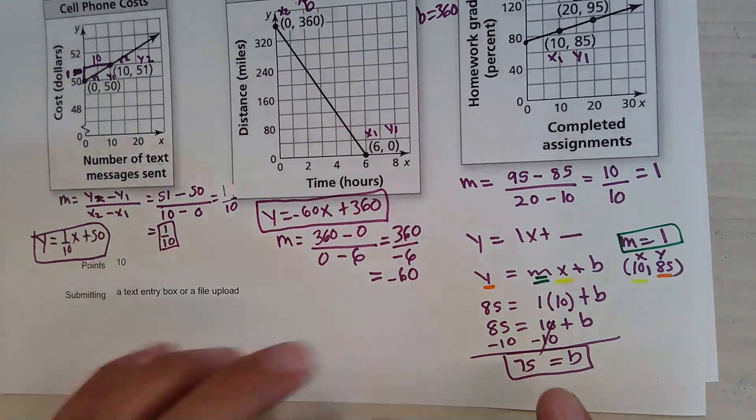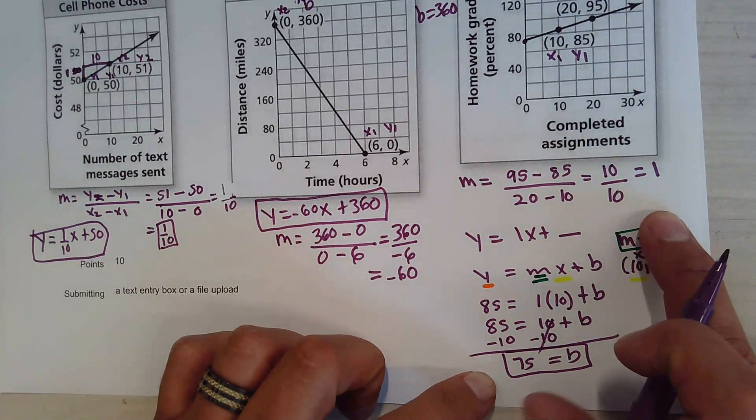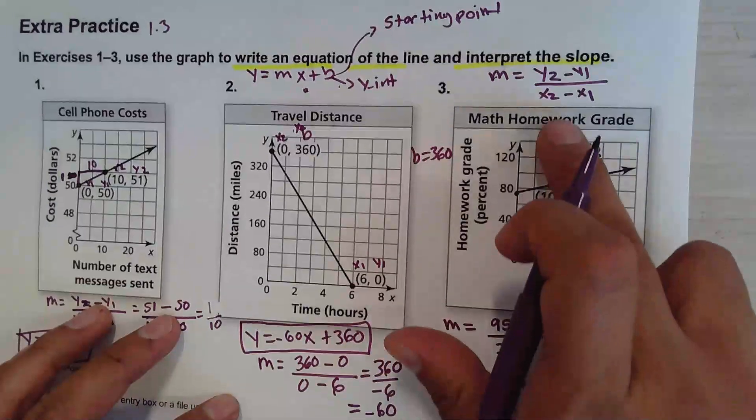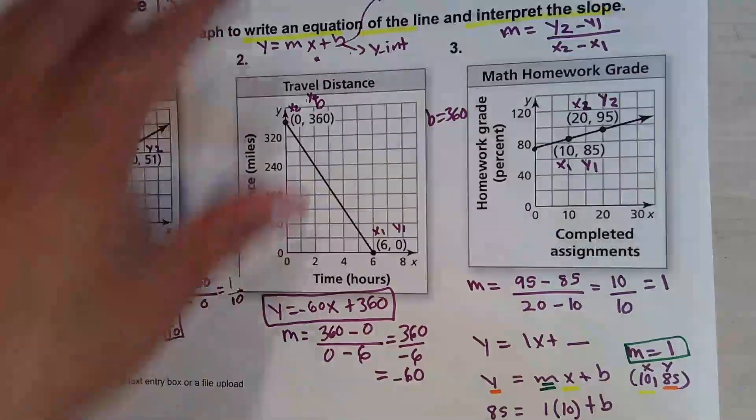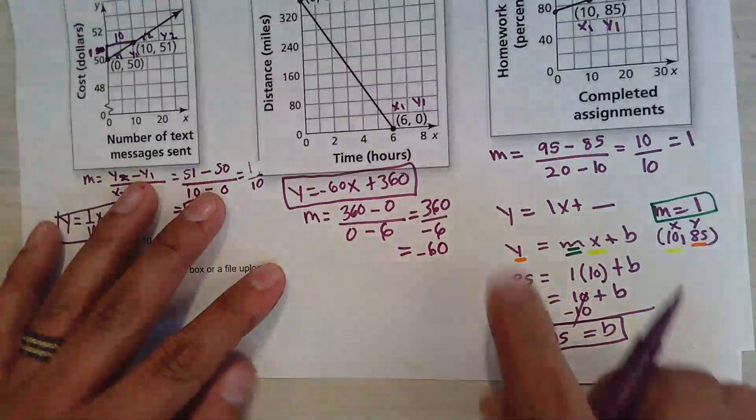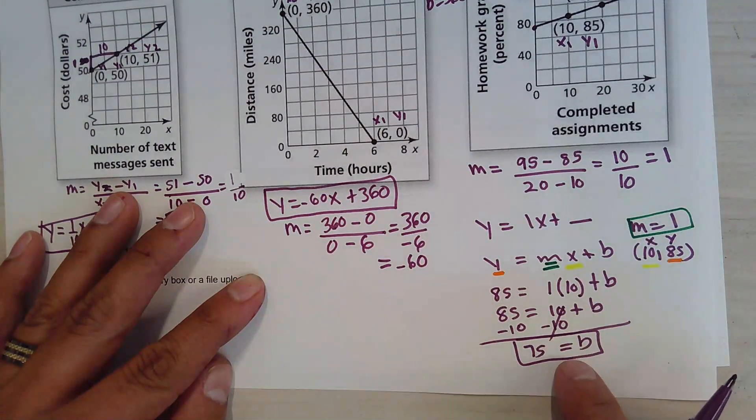Now that you have the y-intercept, which is your starting point, and you have the slope, which is the rate of change, we can put them together and write the equation of the line in slope-intercept form. Let's write it. y equals the rate of change, which is given by 1, and the starting point, which is 75.